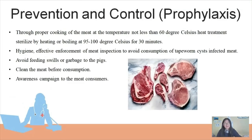Now prevention and control. Teniasis can be prevented and controlled through proper cooking of meat at a temperature not less than 60 degrees Celsius. Heat treatment by heating or boiling at 95 to 100 degrees Celsius for 30 minutes. Effective enforcement of meat inspection to avoid consumption of tapeworm cyst-infected meat. Avoid feeding swill or garbage to pigs. Clean the meat before consumption. Awareness campaigns for meat consumers.